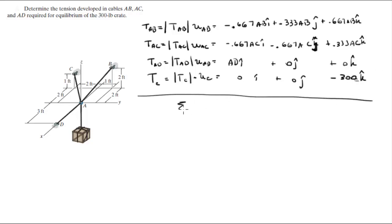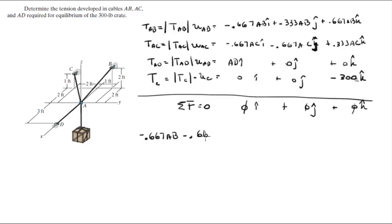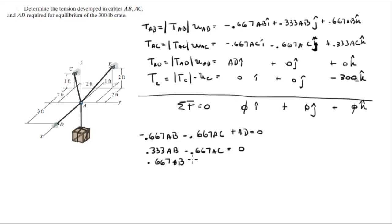Since the sum of forces equals zero, we group by component. Adding all i-components: -0.667·AB - 0.667·AC + AD = 0 (Equation 1). Adding all j-components: 0.333·AB - 0.667·AC = 0 (Equation 2). Adding all k-components: 0.667·AB + 0.333·AC = 300 (Equation 3).